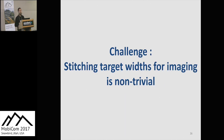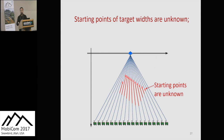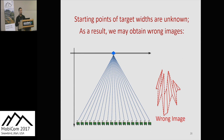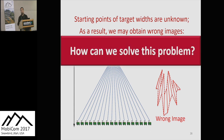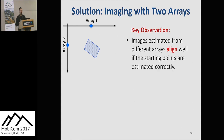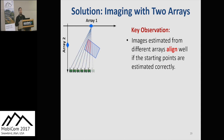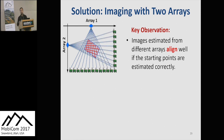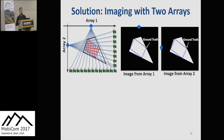I will introduce the basic idea of our imaging method. When the reader moves at a location, based on the phase change measurement, we can estimate the target width information at one angle. When the reader moves over many locations, we can estimate the target width information from many angles. Then, by stitching those estimated target width information, we can obtain the target's cross-section image. However, it is not trivial to stitch those width measurements because we do not know the starting point of the width information, so we will obtain wrong image estimates.